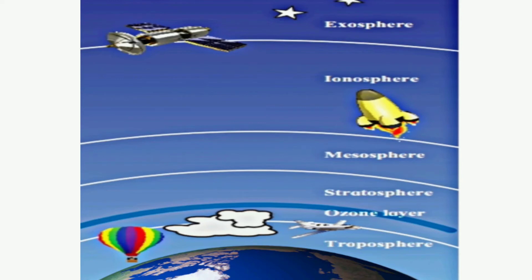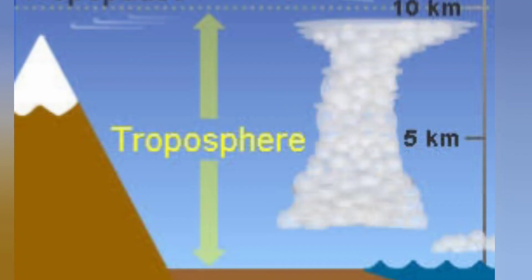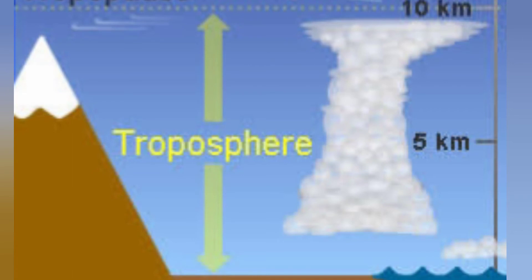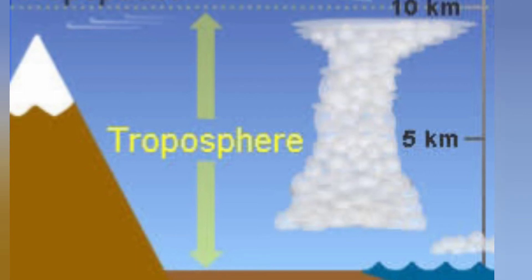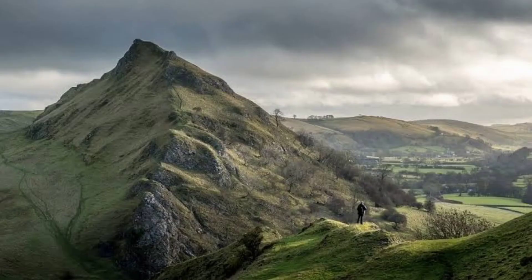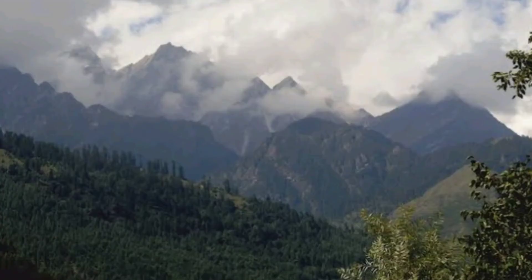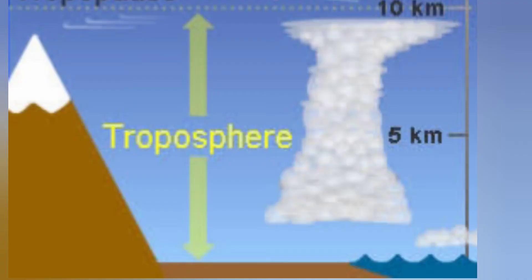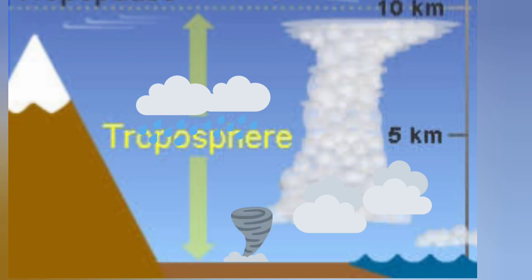There are layers in the atmosphere, named troposphere, stratosphere, mesosphere, ionosphere, and exosphere. The layer that extends from the earth's surface to a height of about 10 to 13 km is called the troposphere. All weather-related phenomena such as formation of clouds, rain, fog, winds, and storms take place in the troposphere.